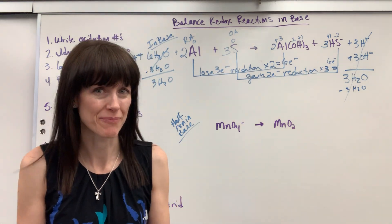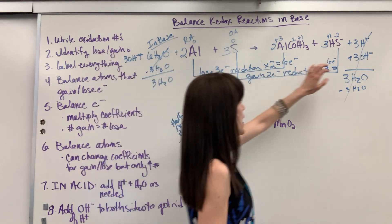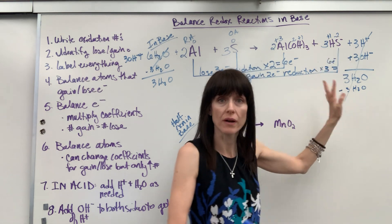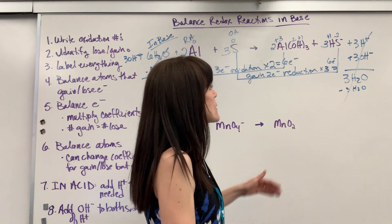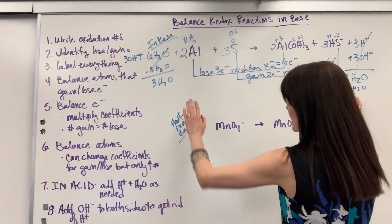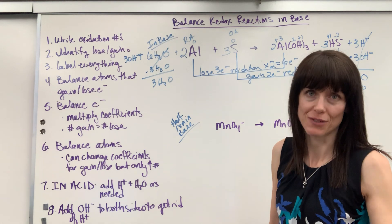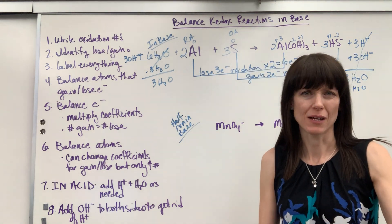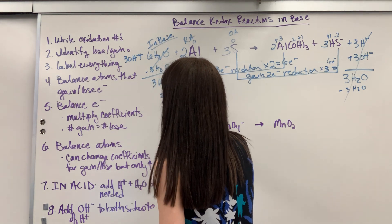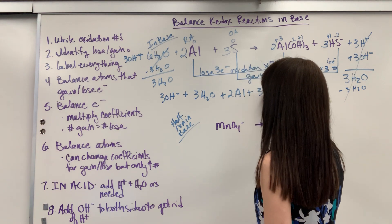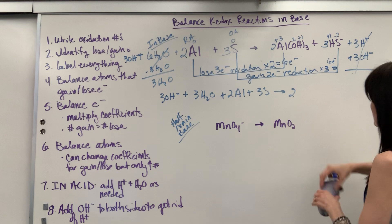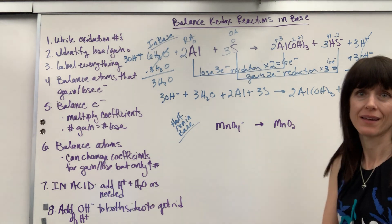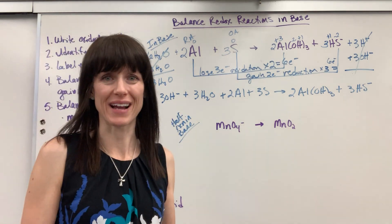Let me walk through that one more time. We balanced as an acid — I added water and hydrogen ion, but I can't leave that hydrogen ion. So I added enough hydroxide to neutralize it — three hydroxide. Whatever I do to one side I have to do to the other side. Then I look at the water; whichever side has more, I subtract from that side, because you always want a positive value. So subtracting three water leaves three water on one side. Let's rewrite it: three hydroxide plus three water plus two aluminum plus three moles of sulfur yields two moles of aluminum hydroxide plus three moles of hydrogen sulfide ion. That is a redox reaction balanced in base.